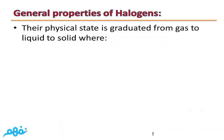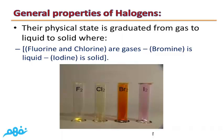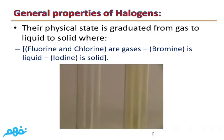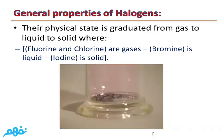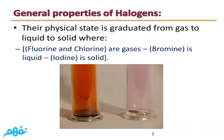Their physical state is graduated from gas to liquid to solid: Fluorine and Chlorine are gases, Bromine is liquid, and Iodine is solid. As shown in the video, the first two tubes are for Fluorine and Chlorine, the third is for Bromine, and the last is for Iodine.